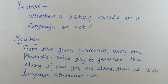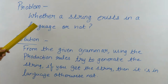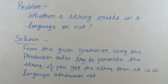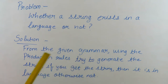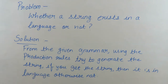There was a problem statement from our last video: whether a string exists in a language or not. After studying language generation from a grammar, we can answer this. From a given grammar using production rules, we try to generate the string we want to test. If we can generate it, it is in the language; if we cannot, then that string is not in the language.